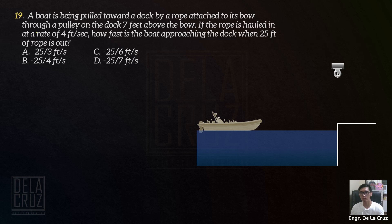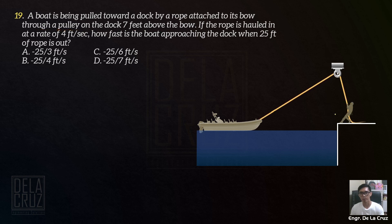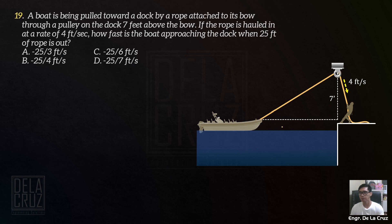So let's say ito yung ating bow — attached to its bow through a pulley on a dock 7 feet above the bow. So if we project the scenario: ito yung bow ng ating boat. The pulley is 7 feet above the bow. We don't have the distance here — tawagin natin siya ang variable X, at ito naman yung variable Z. So kung yung movement dito is 4 feet per second, and this is a frictionless pulley, the same movement yan dito — 4 feet per second. This is now a time rates problem — relative rates.